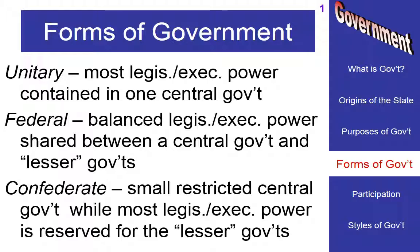Or is the government well spread out, with many different smaller groups that have a lot of the power of government, and then there is cooperation with an overreaching government that doesn't have a lot of the power? We call that a confederate style of government.